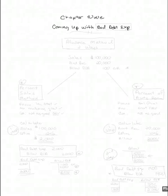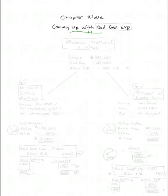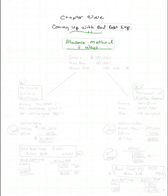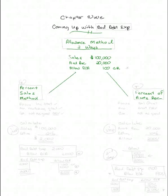Welcome back to my pencast on Chapter 9. This pencast discusses how you come up with the bad debt expense estimate adjusting entry at the end of the accounting period. There are two ways that you can come up with the bad debt expense estimate. I'm going to give you some facts and use those to demonstrate both methods. The first method I want to look at is called the Percent of Sales Method.